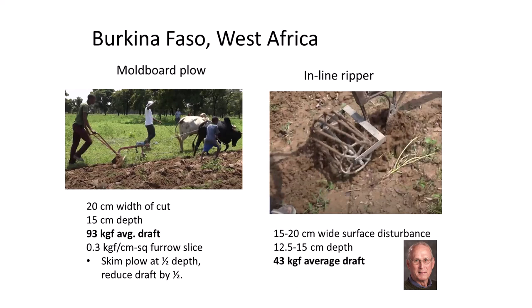Working with local farmers and blacksmiths, an in-line ripper for zone tillage was built. It disturbed a zone of soil 15 to 20 centimeters wide, leaving the inter-row area undisturbed. Zone tillage improves water infiltration and soil health by reducing tillage intensity and conserving protective crop residues. Farmers then plant directly into the rip line. The average draft was only 43 kilograms force, just one half of the draft of the moldboard plow.